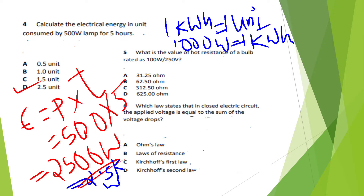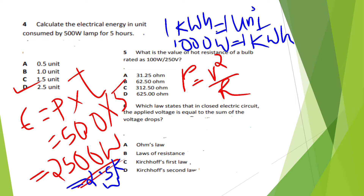Question 5: Find the value of hot resistance of a bulb rated as 100 watts, 250 V. Using the formula Power = V² / R, the answer is Option D.